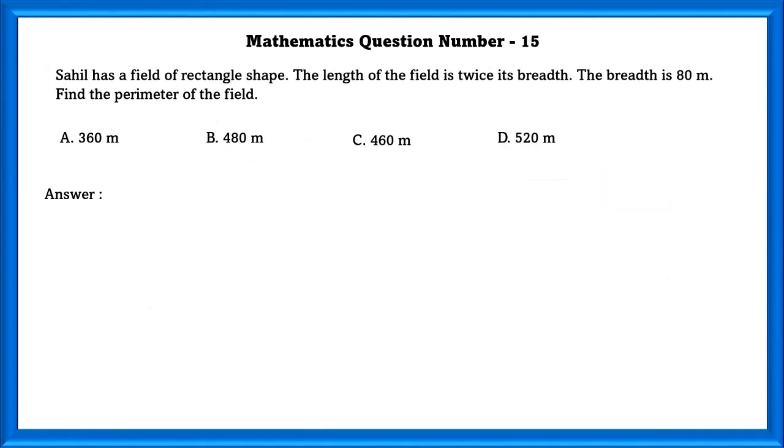Mathematics Question Number 15: Sahil has a field of rectangle shape. The length of the field is twice its breadth. The breadth is 80 meters. Find the perimeter of the field. Given length is equal to 2B and B is equal to 80 meters. So L is equal to 160 meters and breadth is equal to 80 meters. So perimeter is equal to 2 into 160 plus 80 which is equal to 480 meters.